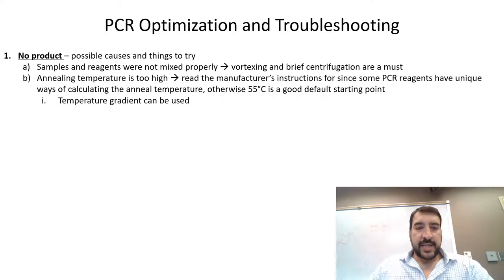Another question you might ask is, is your annealing temperature correct or is it too high? Too high annealing temperature won't allow primers to bind. A good default annealing temperature would be 55 Celsius. You should also read the manufacturer's instructions for your PCR reagents as some products have very different ways of calculating the annealing temperature.